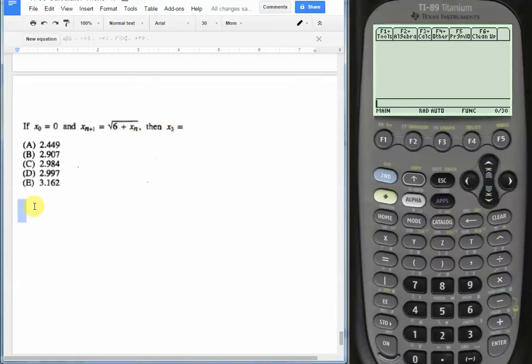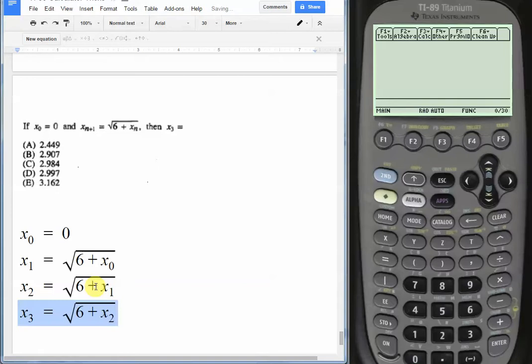So what this is essentially saying is that the first term is 0. They're saying the next term is just going to be radical 6 plus that first term. x sub 2 is just going to be radical 6 plus that previous x sub 1, and the last term x sub 3 is just going to be radical 6 plus that previous x sub 2.